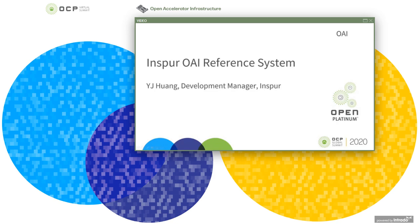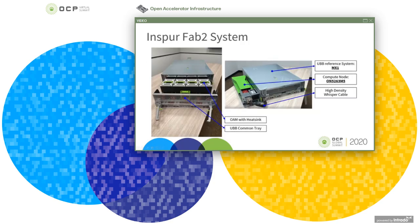Hello everyone, my name is YJ, development manager at Inspir. I'm glad to introduce the 21-inch OAI reference system from Inspir, the Mx1. Here are some real pictures before the introduction. On the left is a 3U OAI reference system, and on the right is the OAI reference system Mx1 with our host ON5263M5, connected by a high-density whisper cable supporting up to 80 pairs differential signal for PCIe Gen4 x32.